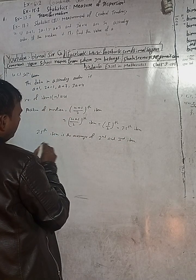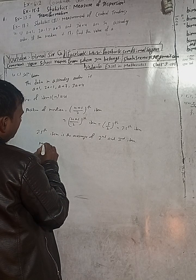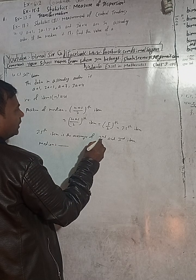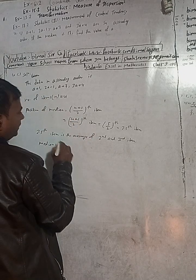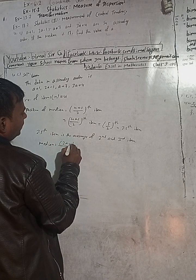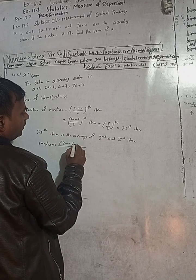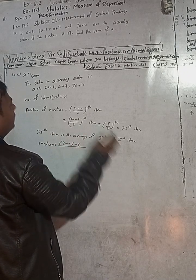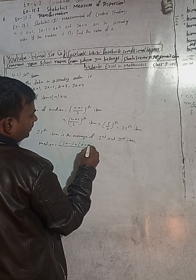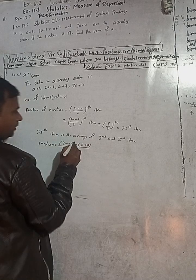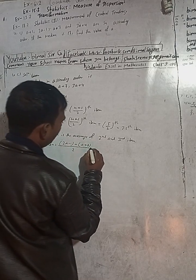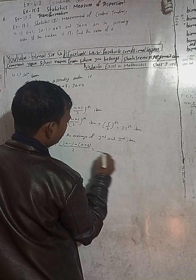Therefore, the median is equal to the average of the second and third items. Median = (2nd item + 3rd item) / 2 = (2a−1 + a+7) / 2.